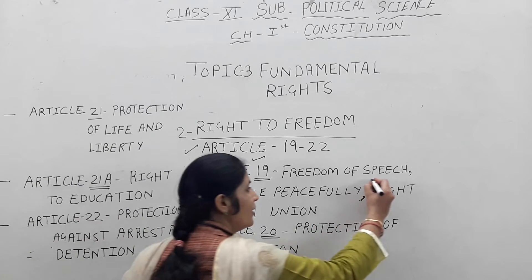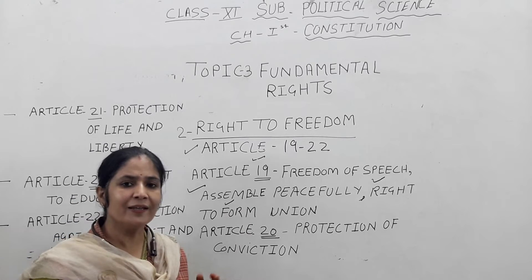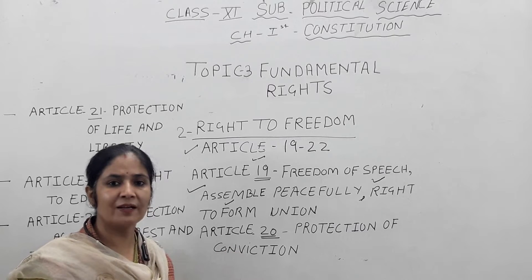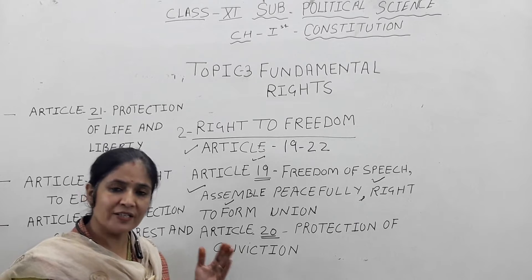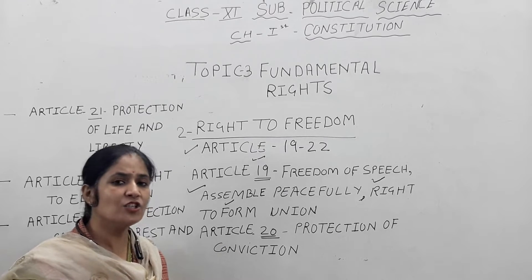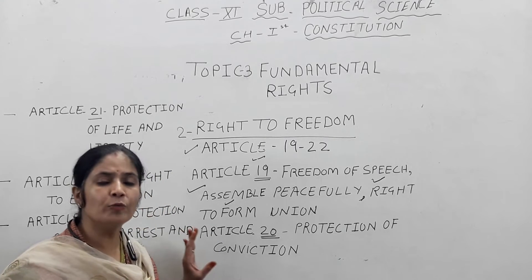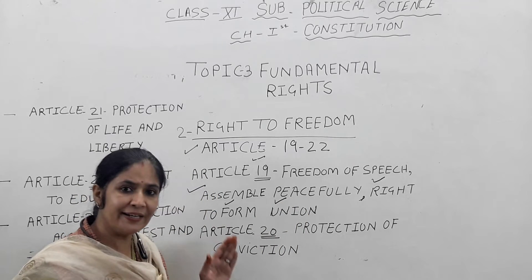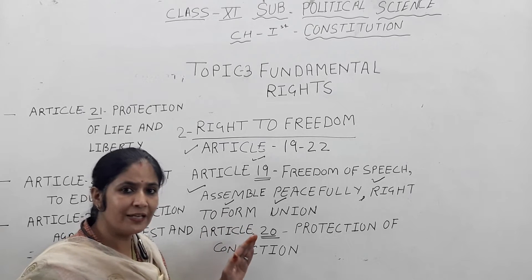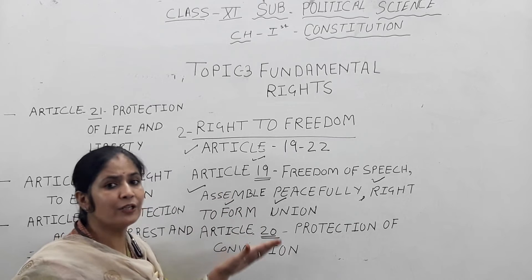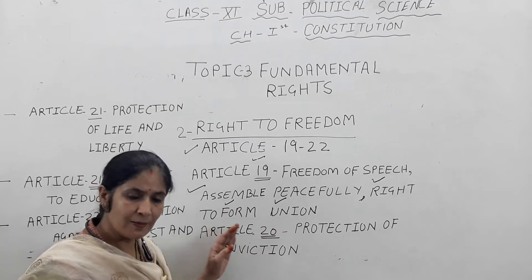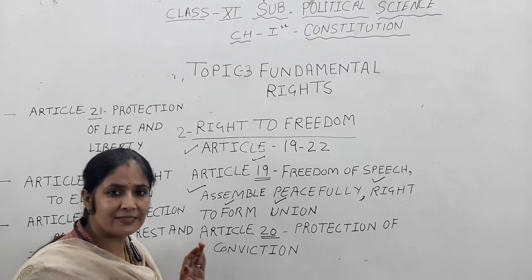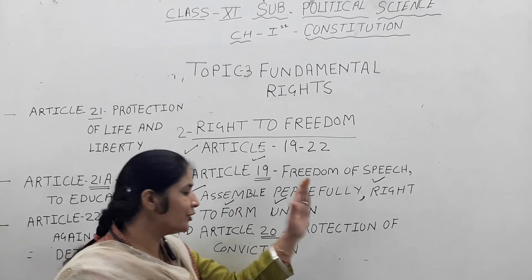Article 19 also provides the right to form a union. There are a number of groups living in society — trading people, business groups, teachers, lawyers, doctors, engineers. All these groups of people can form their own union, whether a trade union or a professional union, regarding their expectations and aspirations. Article 19 provides the freedom to form any union.